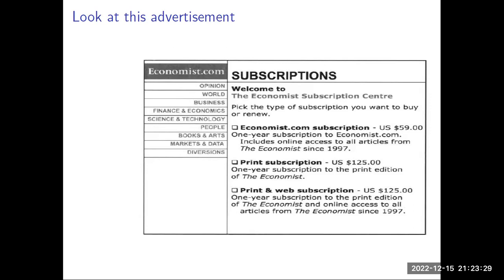But if you go for the print subscription, you will have to pay around $125 per year, and that will get you the print subscription. Another option is the print and web subscription. This is $125 again. That $125 in the third option provides you the subscription to the print edition of the Economist and online access to all articles since 1997.